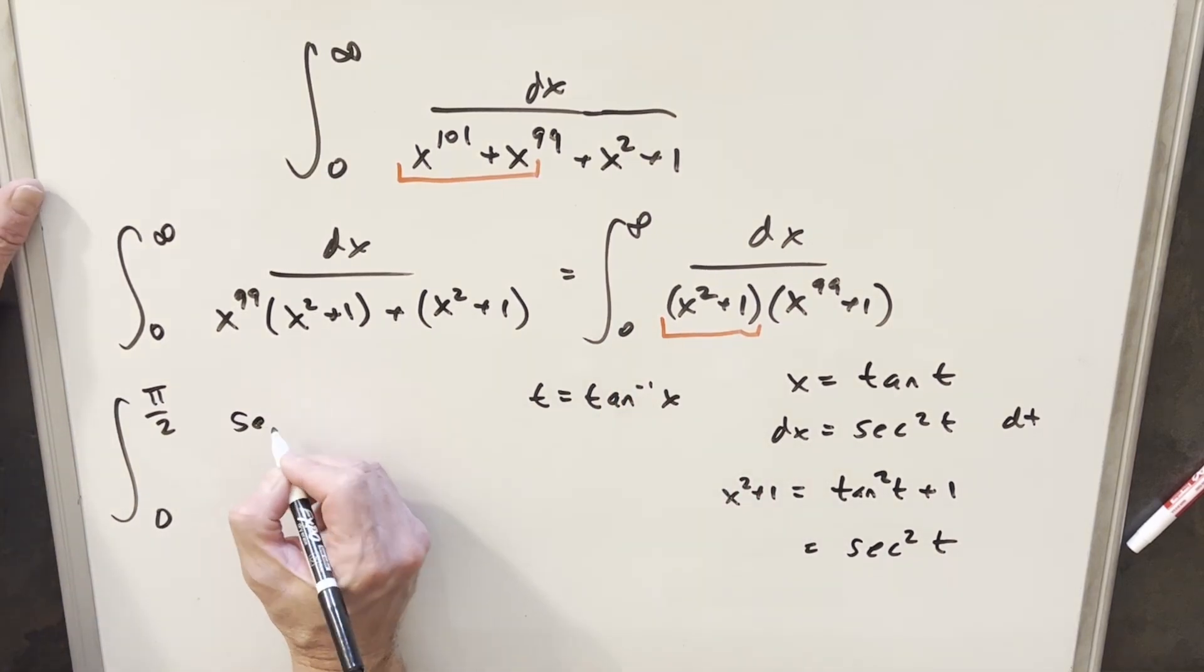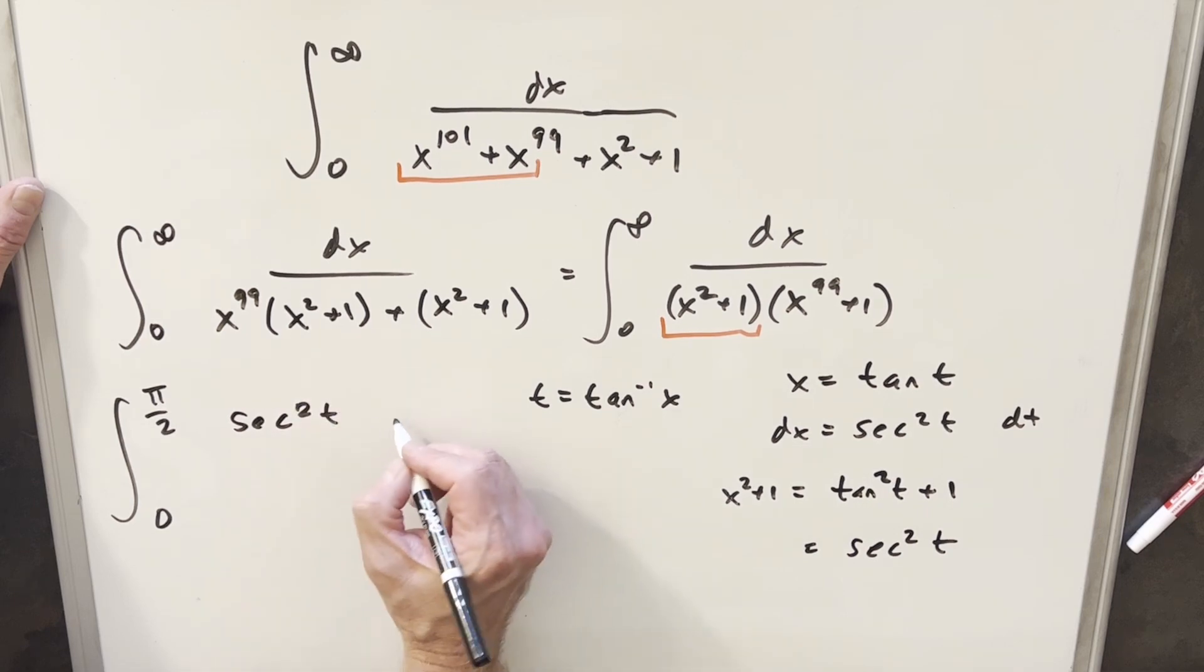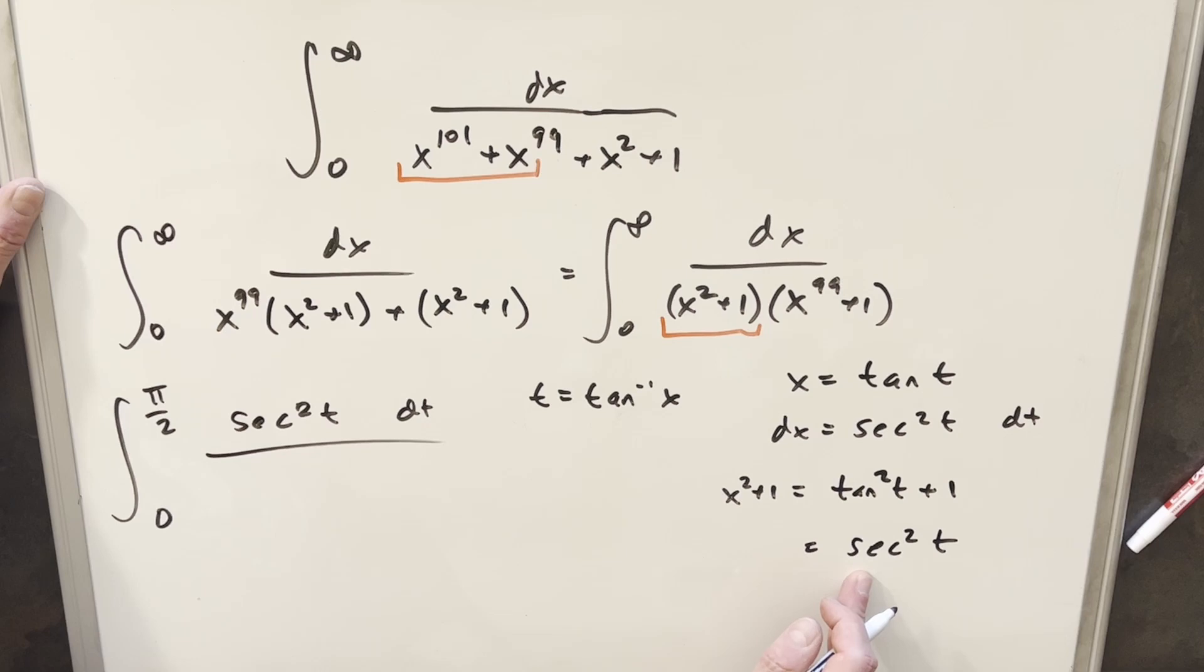Then for our dx value, we have secant squared t dt. x squared plus 1, that's also going to be secant squared. Very nice. And then this is actually going to be, so x is tan of t. So this is going to be tan 99 of t plus 1.